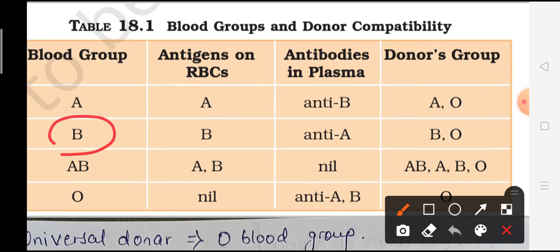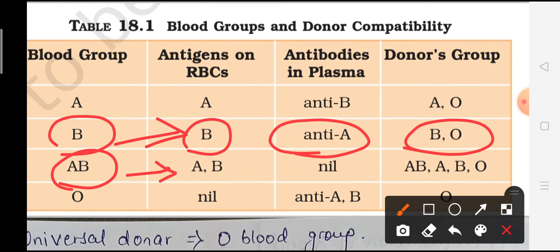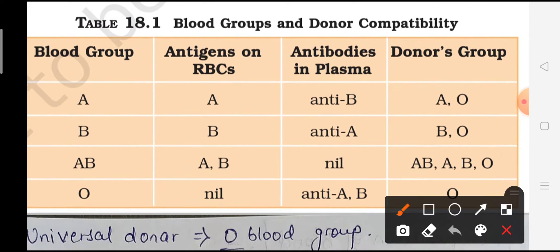For blood group B: the antigen on the RBC surface is antigen B, and antibodies formed are against antigen A. So the donors who can give blood to B group are B blood group and O blood group. For blood group AB: both antigen A and antigen B are present on the surface. In this condition, no antibodies are formed against any antigen. Therefore, AB blood group can receive blood from any blood group - A, B, AB, or O.